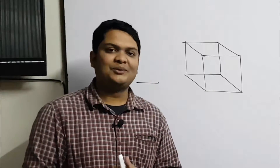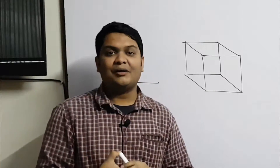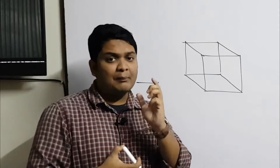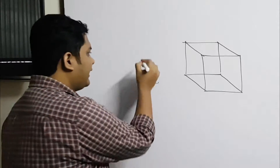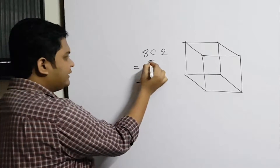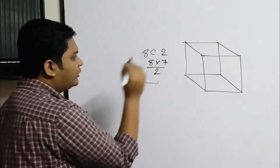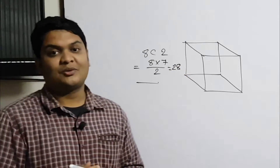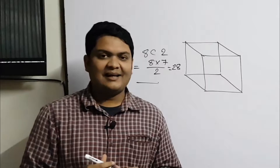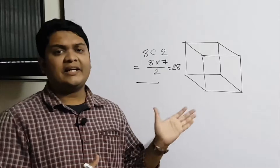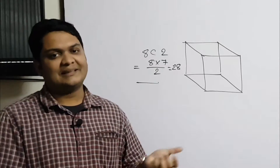From these 8 corner points, if we join any two points together, we get lines. Using 8C2, that becomes 8 × 7 divided by 2. The NC2 concept is truly amazing - many related problems can be solved very easily using NC2.